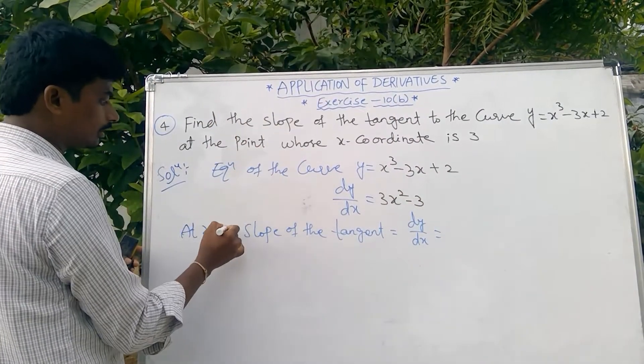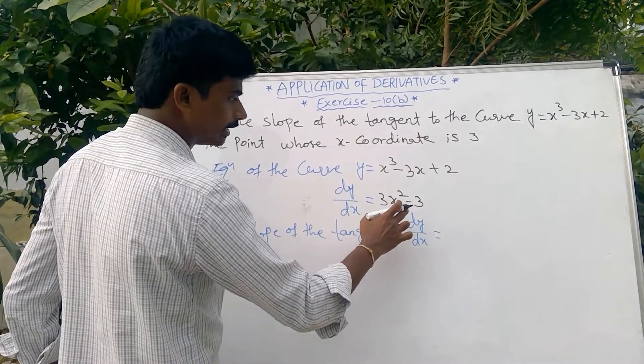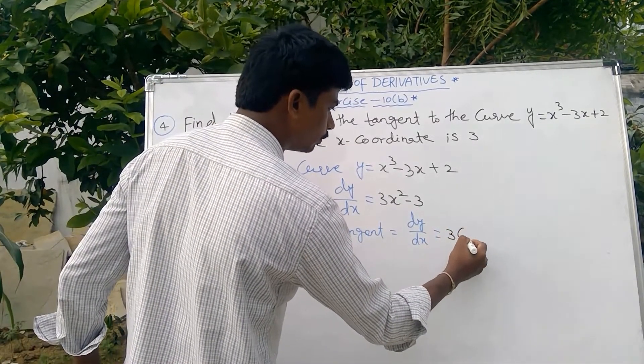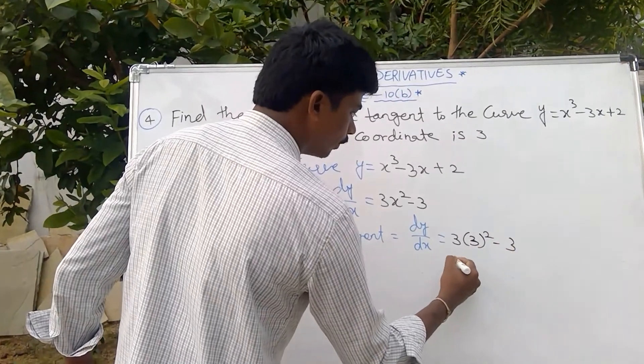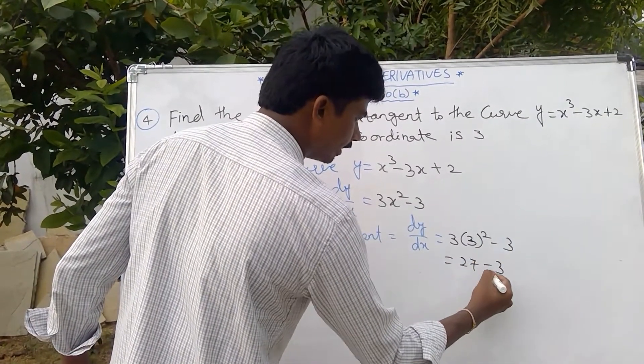At x = 3, slope of the tangent dy/dx = 3(3)² - 3 = 27 - 3 = 24.